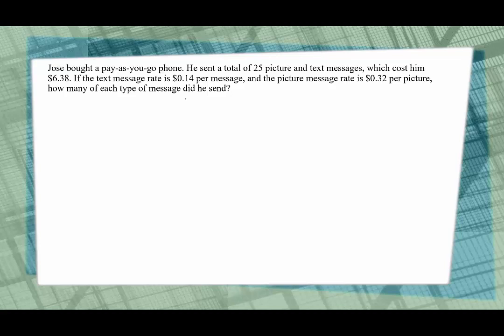Again we're trying to build two equations with two variables, and it looks like we do have some totals here. So we have the total number of messages he sent, and that would be 25. So we're going to say P plus T is equal to 25, where P represents our picture messages and T represents our text messages. What's the other total thing I know? I know he spent a total of $6.38. What's the breakdown of that? Well the text message rate was 14 cents per message, so 0.14 times T, and the picture message rate was 32 cents per picture, so 0.32 times the number of pictures, and this adds up to $6.38.